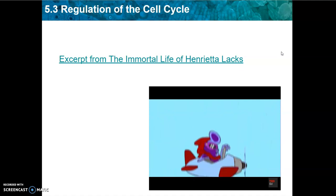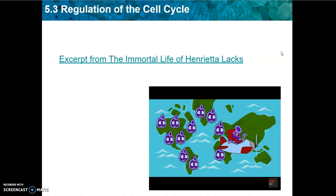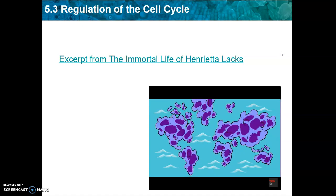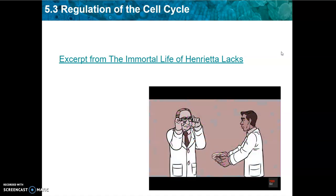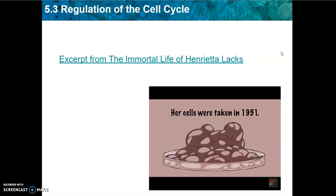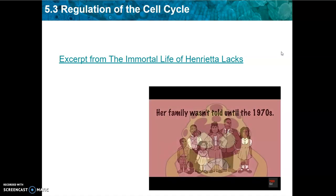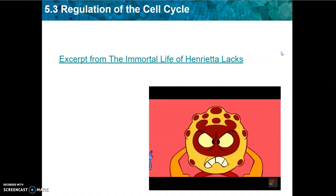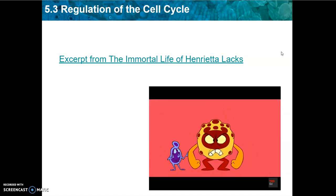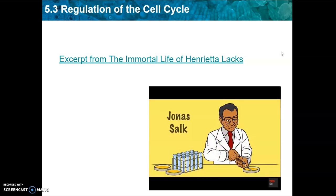Regardless, when Dr. Guy realized he had the first immortal line of human cells, he sent samples to labs all over the world. Soon the world's first cell production facility was churning out six trillion HeLa cells a week. Scientists put them to work in an ethically problematic way, building careers and fortunes off of Henrietta's cells without her or her family's consent or even knowledge until decades later. The polio epidemic was at its peak in the early 50s, and HeLa cells, which easily took up and replicated the virus, allowed Jonas Salk to test his vaccine.